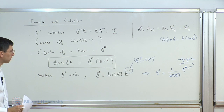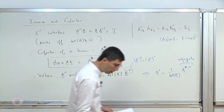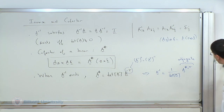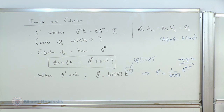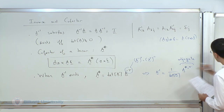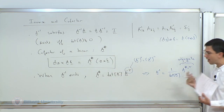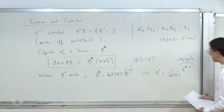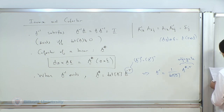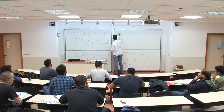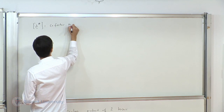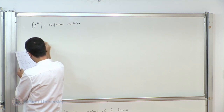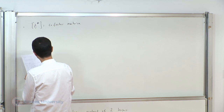For non-trivial solutions, rearranging gives (A minus lambda I) V equals zero. Since V is non-zero, the tensor (A minus lambda I) must not be invertible. The condition for non-trivial solutions is therefore that the determinant of (A minus lambda I) equals zero. This is the characteristic equation, which is cubic in lambda, and the three invariants of A appear explicitly.